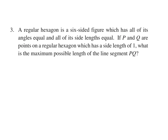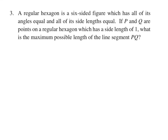A regular hexagon is a six-sided figure which has all of its angles equal and all of its side lengths equal. If P and Q are points on a regular hexagon which has a side length of 1, what is the maximum possible length of the line segment PQ? Let's draw a hexagon — all sides the same length, and they've told me that length is 1, so I put 1s everywhere. When you stare at this, if P is here and Q is here, that line will be the longest line segment between any two points, so we have to figure out that distance.